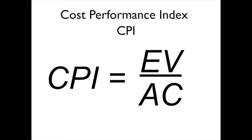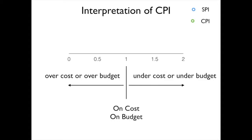We interpret CPI by looking at the value that we receive. If that number is greater than 1, we are saying that we are under cost or under budget. If it is less than 1, we are over cost or over budget. If we get a CPI value of 1, then we're right on target or right on budget.